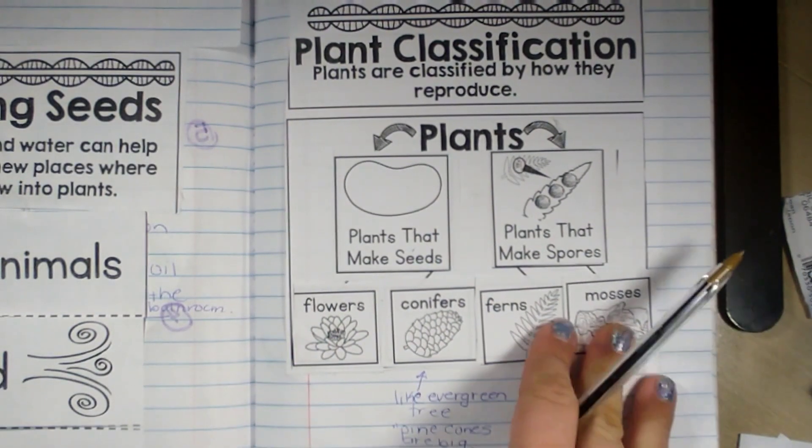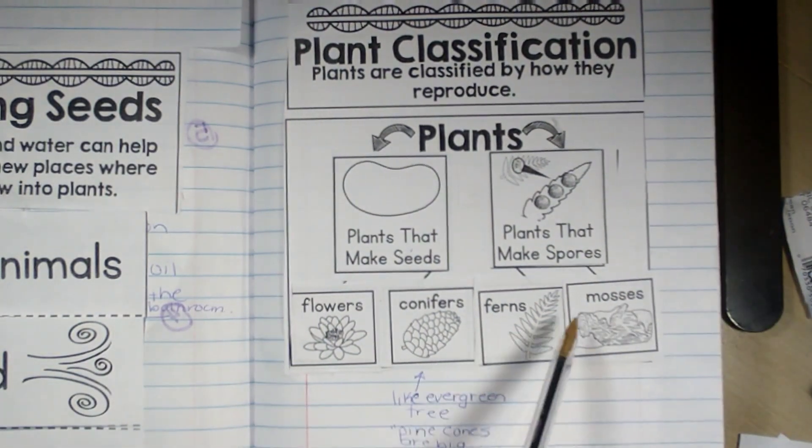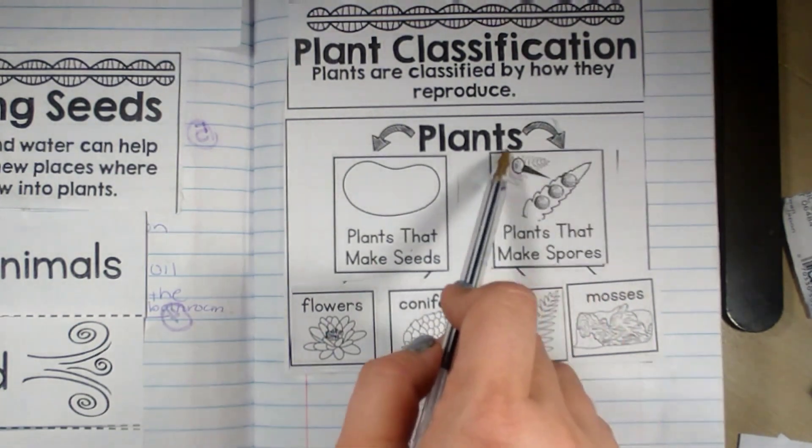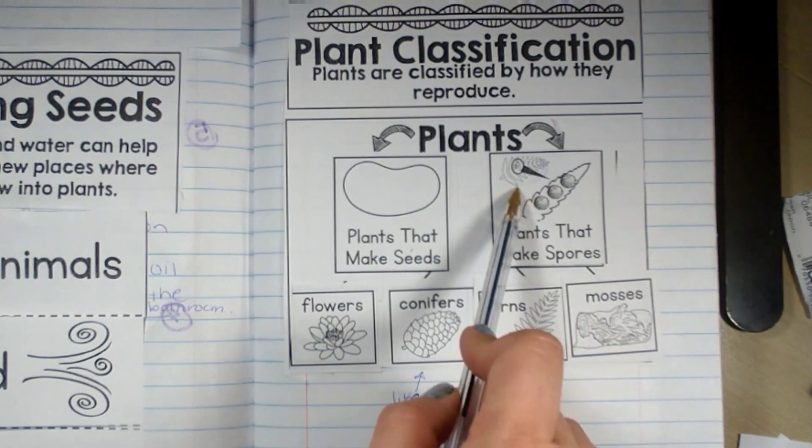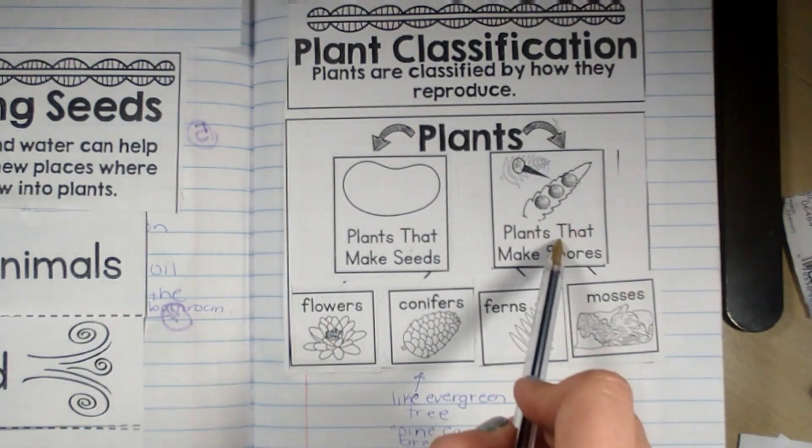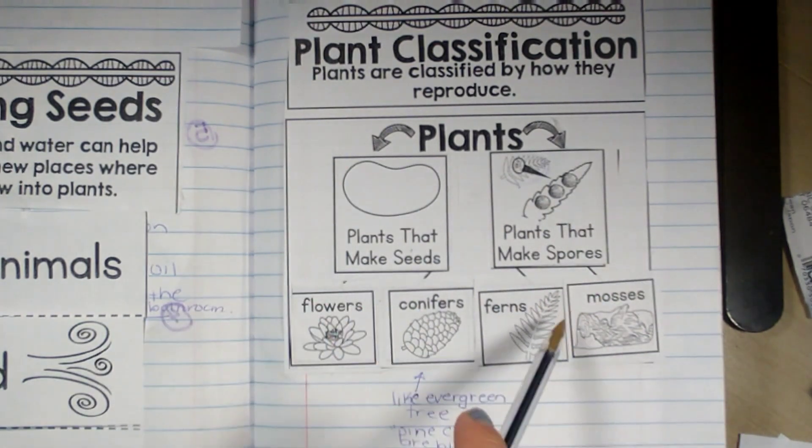All right, now that we have those in here, let's talk about the differences. So ferns and mosses have spores. Spores are created by the plant itself. It doesn't need another plant to pollinate it. So ferns and mosses just create their own spores and they can spread like regular seeds.